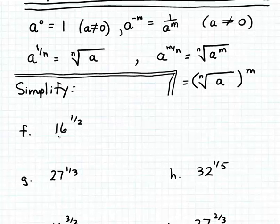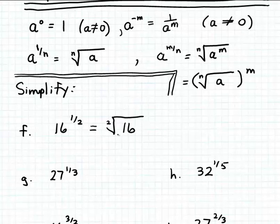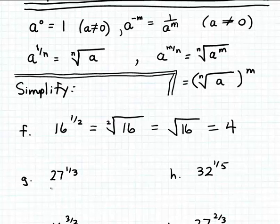We're going to start with example f. Suppose we want to simplify 16 to the 1/2 power. According to our first rule for simplifying fractional exponents, 16 to the 1/2 power is just another way of writing the square root of 16. When writing square roots, you don't have to include the index value with the radical sign. The square root of 16 is 4, because 4 squared is 16. So simplifying 1/2 powers is easy — the 1/2 exponent is just another way of expressing a square root.